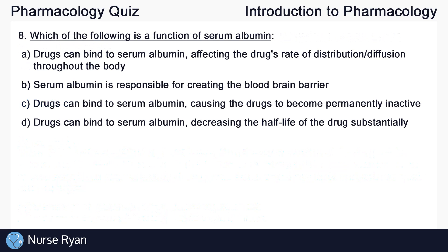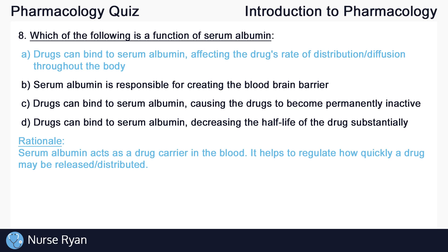Moving on to question number eight: Which of the following is a function of serum albumin? The answer here is A — drugs can bind to serum albumin, affecting the drug's rate of distribution and diffusion throughout the body. Serum albumin acts as a drug carrier in the blood, helping to regulate how quickly a drug may be released or distributed.